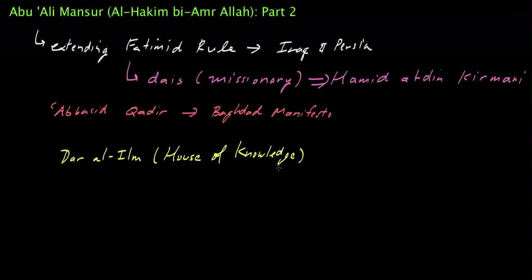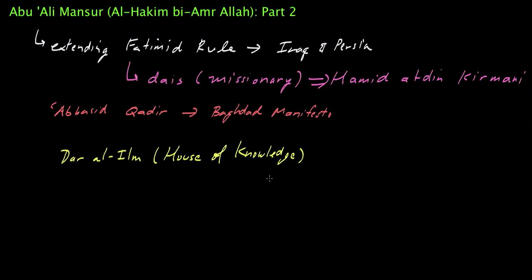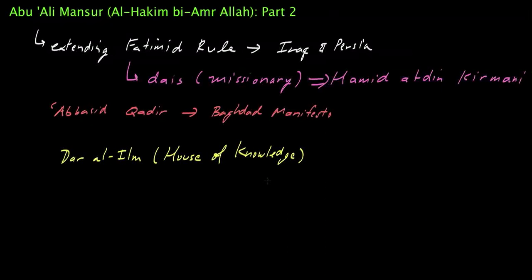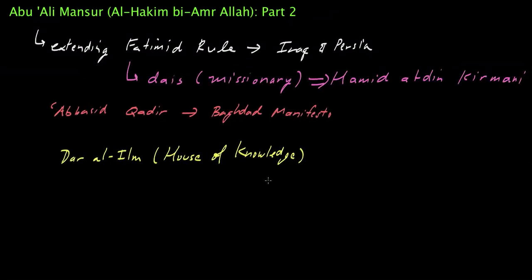And according to the Institute of Ismaili Studies, Dar al-Ilm was, quote, a scholarly institution founded in Cairo by the Fatimid Caliph Imam Al-Hakim in 1005 CE. Its building housed a large library containing thousands of volumes and a public meeting room. It was the meeting place for traditionists, grammarians, jurists, astronomers, logicians, and mathematicians. It was there that Al-Khali Al-Numan, who died in 974, gave lectures on the Ismaili Dawah.